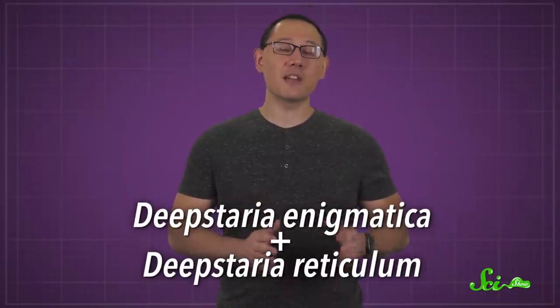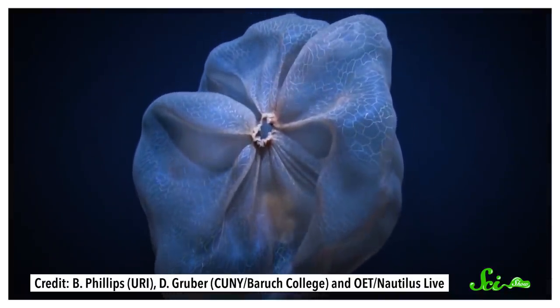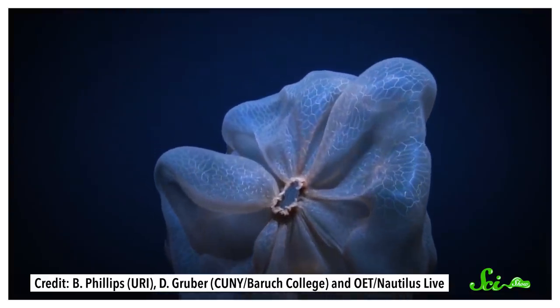There are two species of Deepstaria jellies, and they don't look like jellyfish. They lack the long-stinging tentacles that are a hallmark of many jellies. Instead, all you see is their bell, which is very thin, fragile, and extremely oversized in comparison to other jellies.